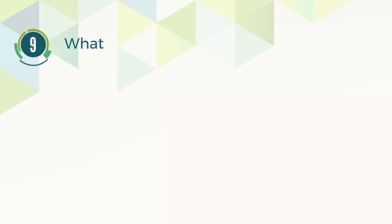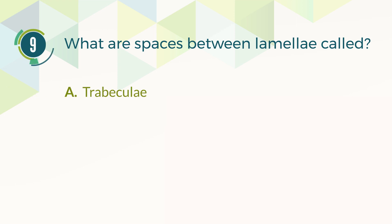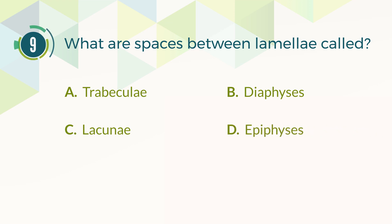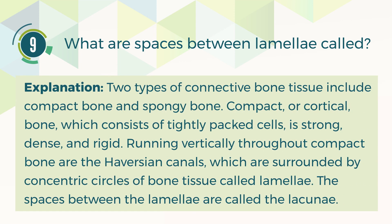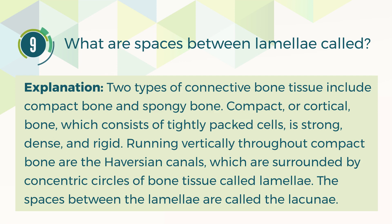Number nine. What are the spaces between lamellae called? A. Trabeculae. B. Diaphyses. C. Lacunae. D. Epiphyses. The correct answer is C, lacunae. Two types of connective bone tissue include compact bone and spongy bone. Compact, or cortical, bone consists of tightly packed, strong, dense, and rigid cells. Running vertically throughout compact bone are the Haversian canals, surrounded by concentric circles of bone tissue called lamellae. The spaces between the lamellae are called the lacunae.